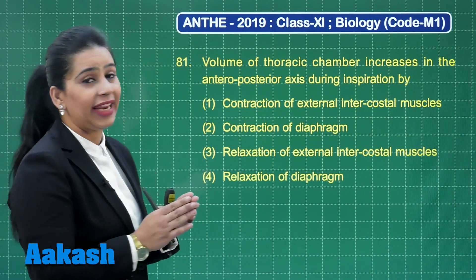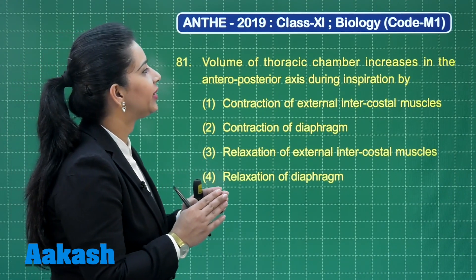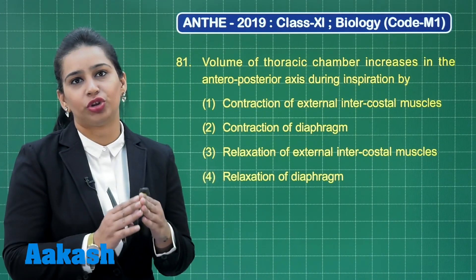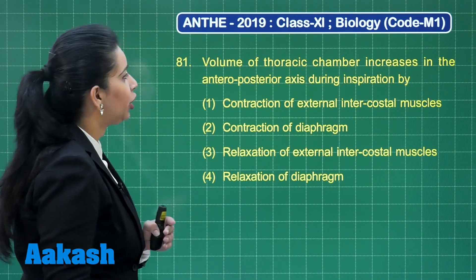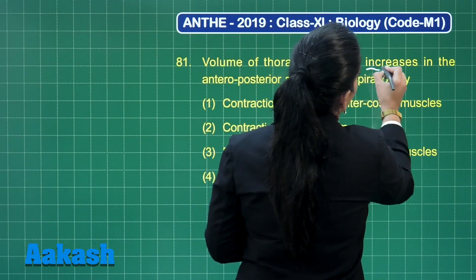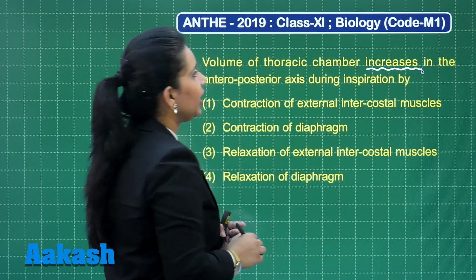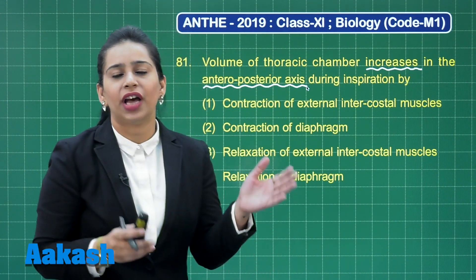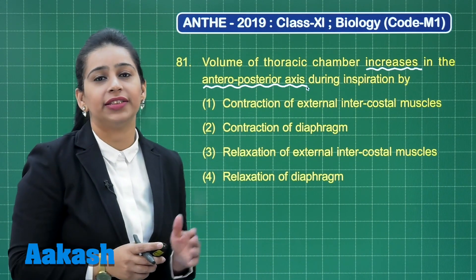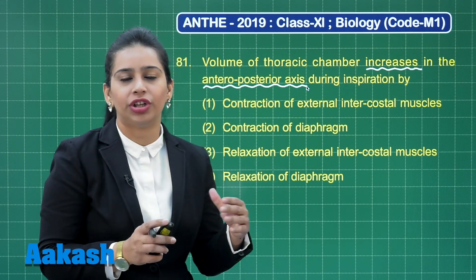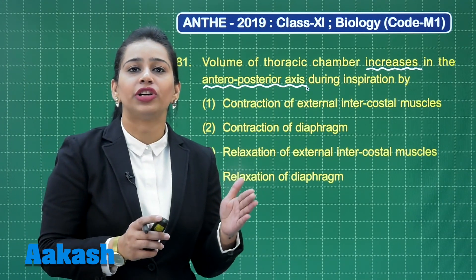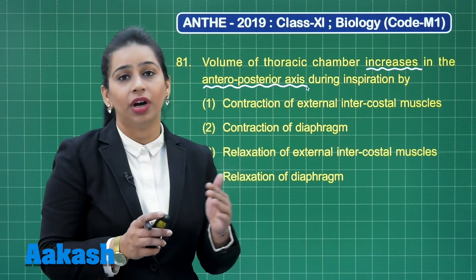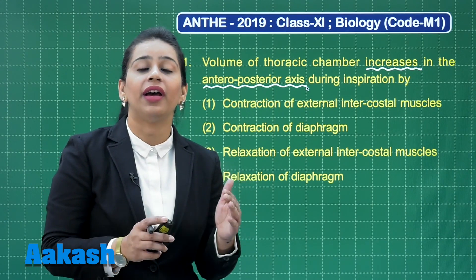Question number 81 asks: the volume of the thoracic chamber increases in the antero-posterior axis during inspiration by what? We need to remember this is specifically about the increase in volume in the antero-posterior axis. As you have already learned, inhalation or inspiration is initiated by the contraction of the diaphragm and contraction of the external intercostal muscles of the ribs.